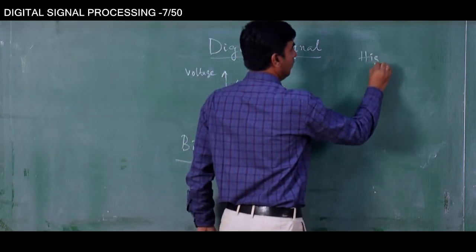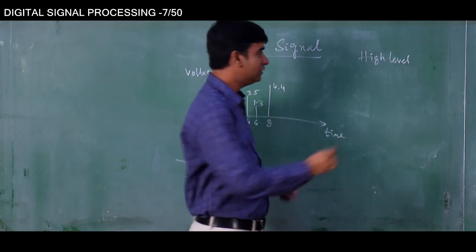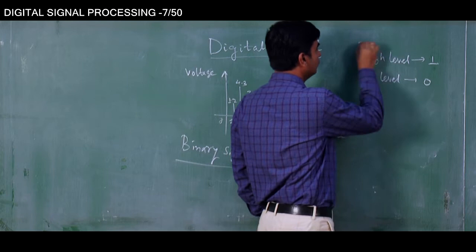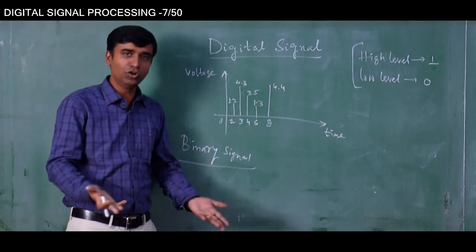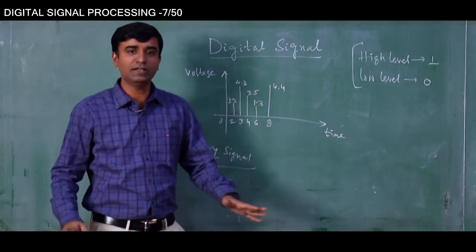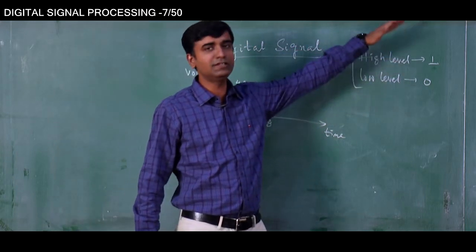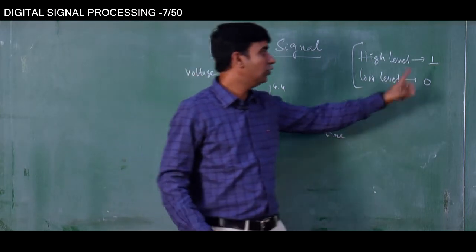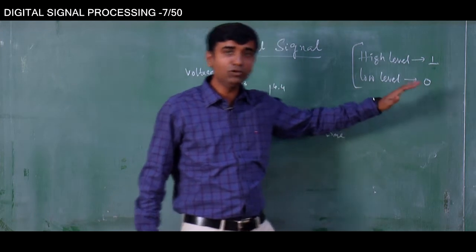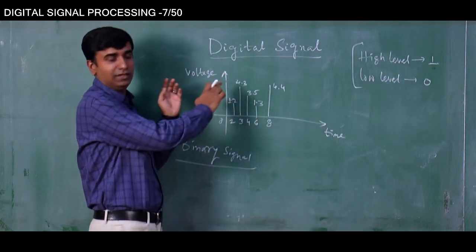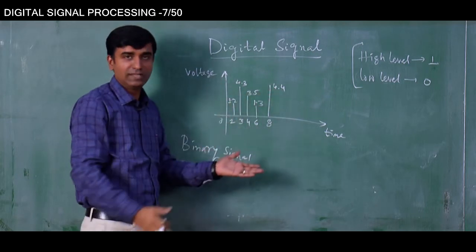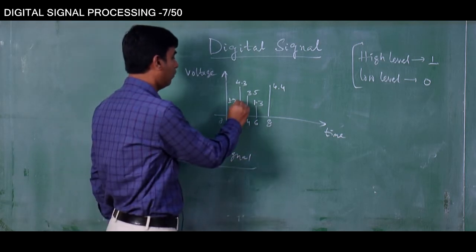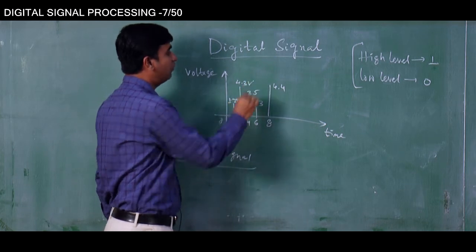The high level in digital signals is represented by 1 and the low level is represented by 0. Now, 0 and 1 are not two numbers — they are representing two levels. If this signal is a voltage signal, all these values represent some voltage. For example, at the second time instant the voltage value is 1.2 volts, and at the third instant this is 4.3 volts.